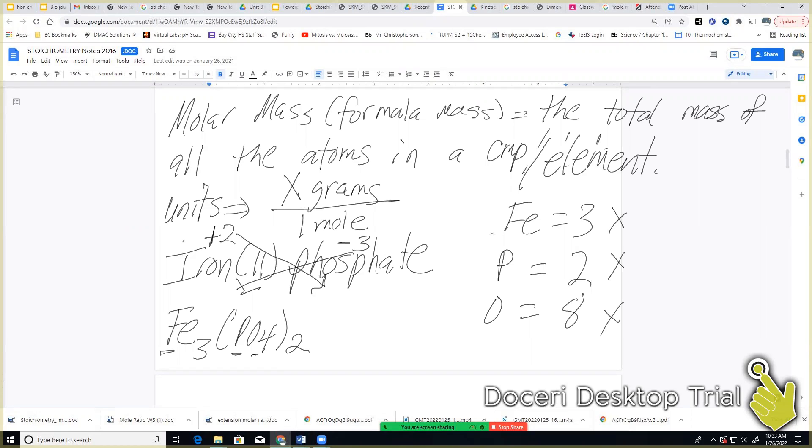So what did y'all round iron to? 55.85 and phosphorus, 30.97 and oxygen ends up being 16. All right. So we just multiply through. And here I had 167.55, 61.94 and lastly 128. Add that all up together and I got 357.49 grams per one mole. Is that what y'all got also?